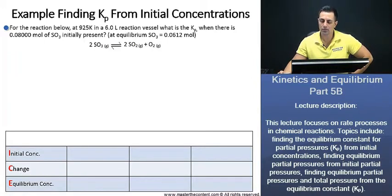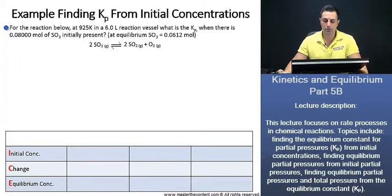For the reaction below at 925 Kelvin in a 6 liter reaction vessel, what is the equilibrium constant for partial pressures when there is 0.08 moles of sulfur trioxide initially present? And at equilibrium, the sulfur trioxide, the amount that we have is 0.0612 moles.